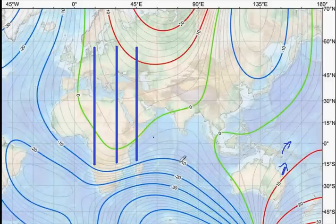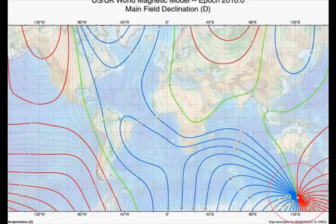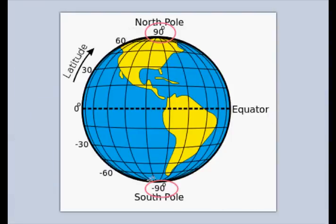Over here, where your compass points North, it's actually 10 degrees to the West of True North. You'll see on this map that the South Magnetic Pole is this area here, where all of these lines converge. That's a position pretty much south of Australia, at about 65–66 degrees South. So it's not at the South Pole.